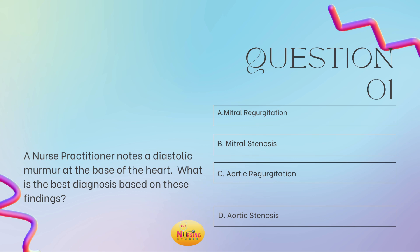So diastolic murmurs — you know Brittany's brilliance. I always say sassy systolic says men really are stupid, right? Men really being mitral regurgitation, are stupid being aortic stenosis. And then diastolic are the opposite. So let's look at the location — it's at the base of the heart. Aortic is located at the base and mitral is located at the apex of the heart, because the aortic region is higher up than mitral. For these questions, this is what you need to hone in on. So here it's asking for the base, so you know it's going to be an aortic murmur. And then we said diastolic — aortic stenosis is a systolic murmur, so the answer is C, aortic regurgitation, because it's diastolic.